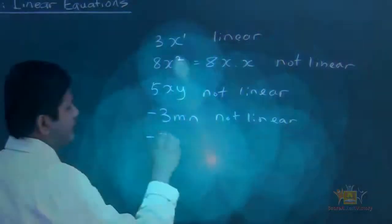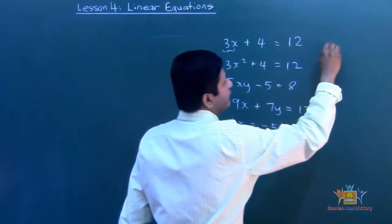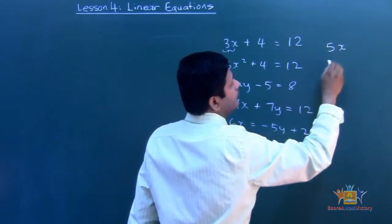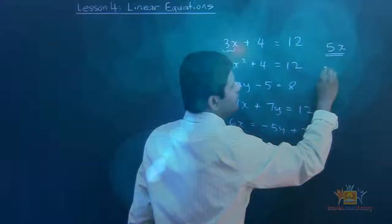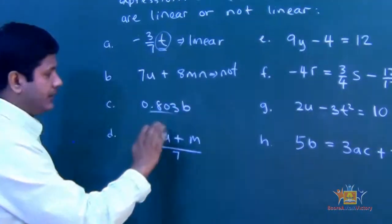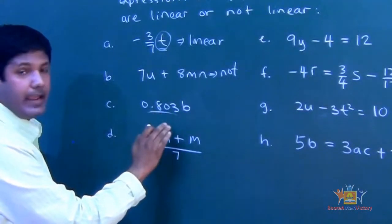And what about if it's negative 7? So, let's say if I give you 5x, that's the term. If I give you b, does it matter with this coefficient, 0.803?